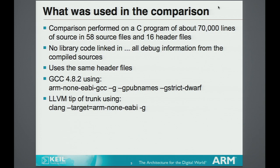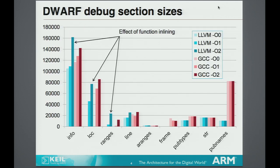I used a simple program — about 70,000 lines of source. These are the sizes compiled at different optimization levels. We can see that with LLVM, as it starts inlining, the sizes of the debug sections grow. Whereas some sections — like the string table, pub types, and A range — are all static. The interesting one on the right is for GCC: the pub names is way bigger, due to enumerations being duplicated many, many times.